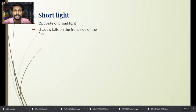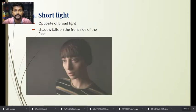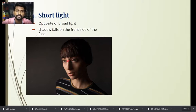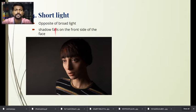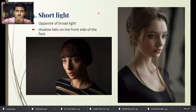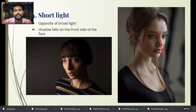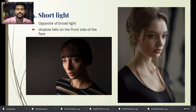The fourth type is short lighting, which is opposite to broad lighting. Broad lighting covers the larger area of the face, whereas short lighting covers the shorter area of the face. The shadow falls on the front side of the face. The broad area remains in shadow and the shorter area is filled with light in this type of lighting.